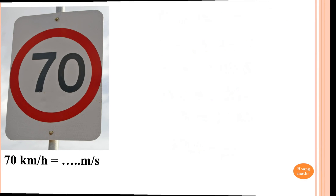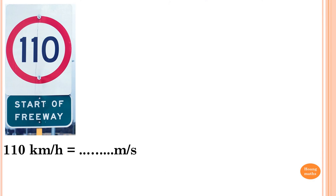Now look at this question — it's the same thing. 100 kilometers per hour, convert to meters per second. With this one I'm going to do a different method, so see if you can follow. This is a lot faster, but you need to remember the process. So 100 kilometers per hour equals meters per second.